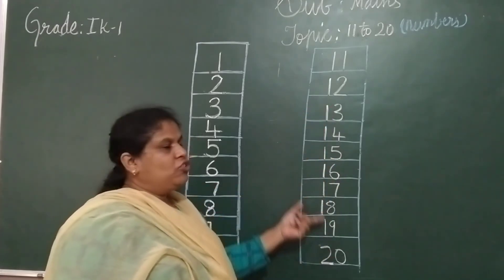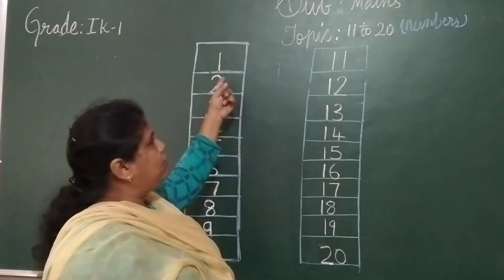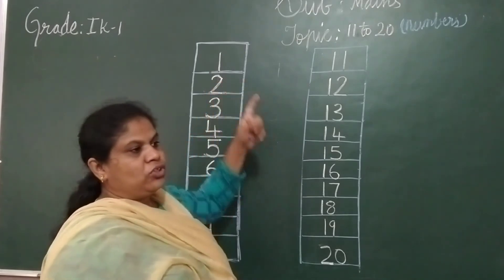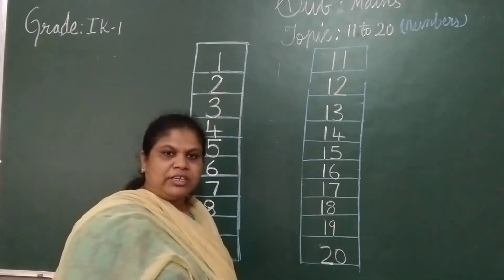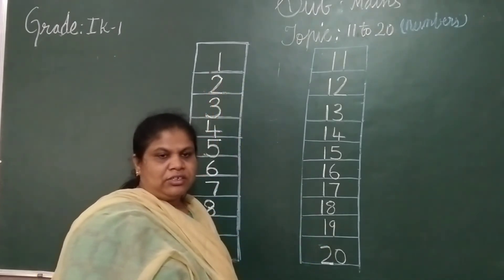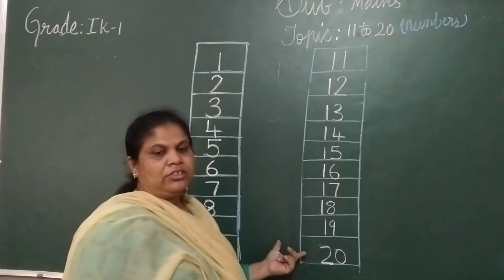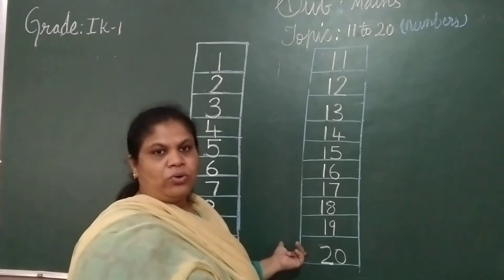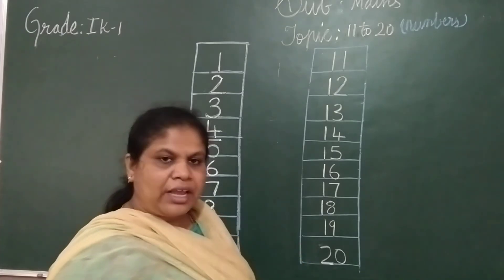So you have to practice learning orally from 1 to 20. In this class I have taught you 11 to 20. So now you know how to count from 1 to 20. Okay children? Learn this so that you can say it orally also. Okay children? Thank you.